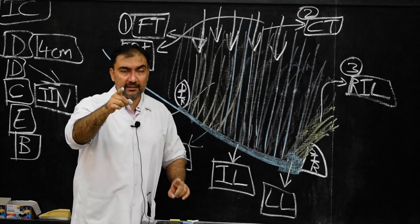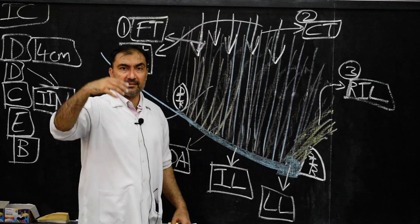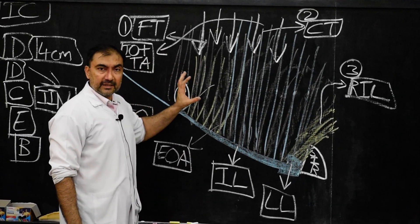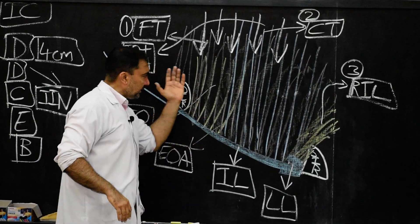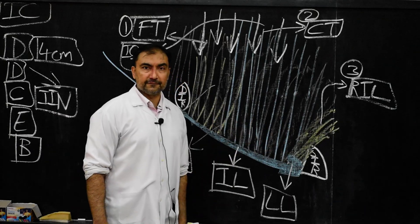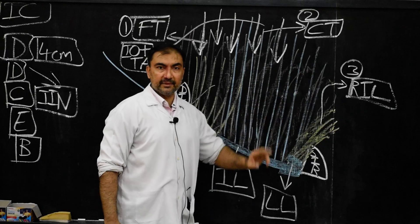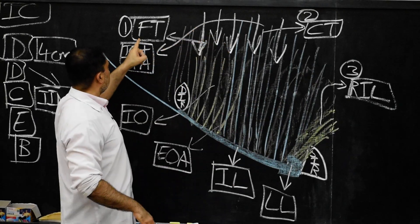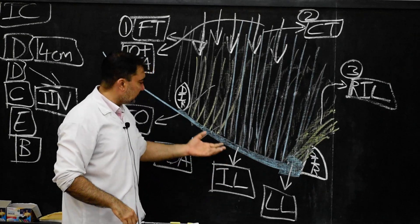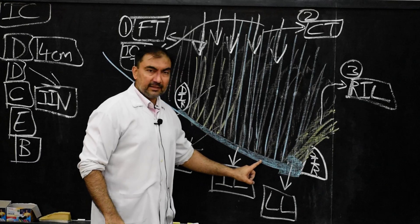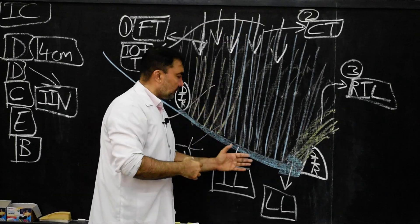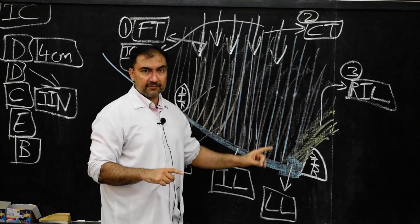Here we finish the four boundaries of the inguinal canal. Once again: the anterior wall is formed by skin, superficial fascia, external oblique aponeurosis, and in the lateral one-third by fibers of internal oblique. The posterior wall is formed entirely by fascia transversalis, by conjoint tendon in the medial half, and medial one-fourth by reflected part of inguinal ligament. The roof is formed only by fibers of internal oblique and transversus abdominis muscle. The floor is formed by the grooved upper surface of the inguinal ligament and medially by the lacunar ligament. This is asked many times in MCQs.